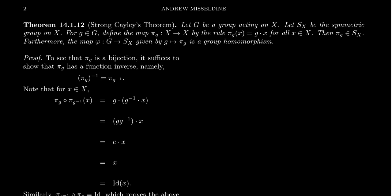So the first thing we have to prove is that π_g is a bijection. By construction it's a map from X to X. To show it's bijective, we could show it's one-to-one and onto individually, but an alternative approach is to produce its function inverse. Because we're already identifying this function with a group element, there's a natural candidate for the inverse: the function associated to g inverse. Our claim is that π_g composed with π_{g⁻¹} is the identity function, which proves π_g is bijective.